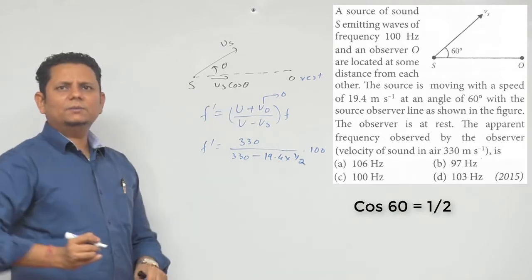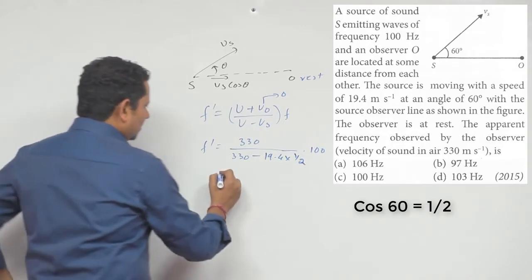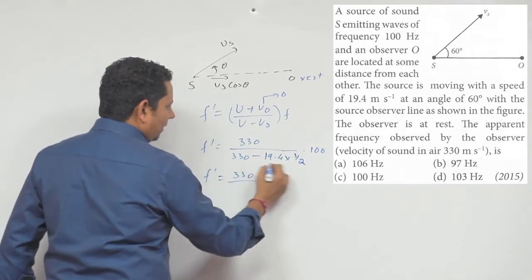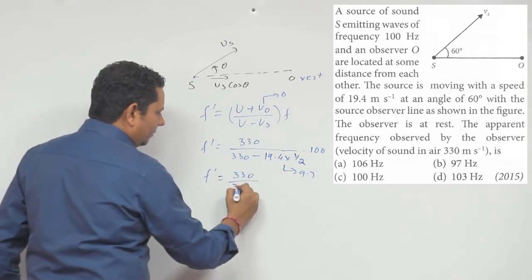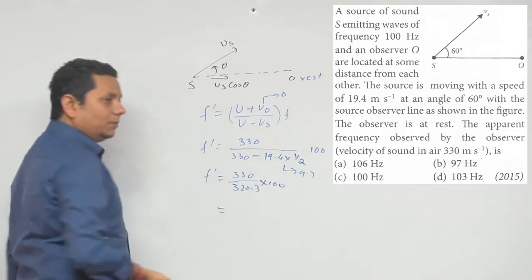So, this will be 330 minus, so this will be 9.7. So, this value will be 330 divided by, this will be 330 minus 9.7. So, this will be 320.3 multiplied by 100. Again, this calculation will be exam hall.